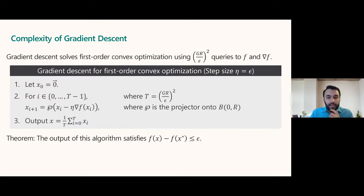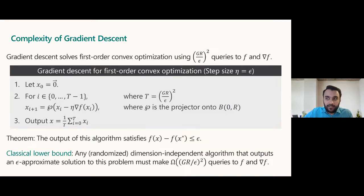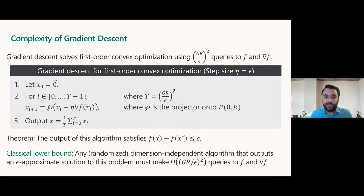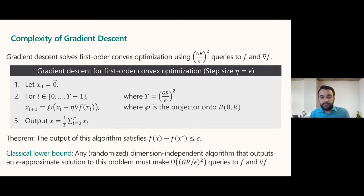More interestingly, gradient descent cannot be improved upon. Any classical algorithm, even if randomized, must make at least G*R/epsilon squared queries — so gradient descent is optimal among classical algorithms. This is the Omega(G*R/epsilon squared) lower bound. Gradient descent is a deterministic algorithm with no random choices, but even randomized classical algorithms cannot improve on this complexity in the dimension-independent setting.